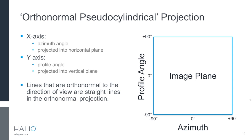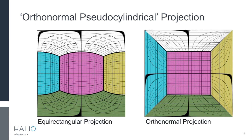The projection we're using for our maps is what we're calling an orthonormal pseudo-cylindrical projection. On the x-axis it has azimuth angle, and on the y-axis it has profile angle. The benefit is that lines orthonormal to the field of view are straight in the projected image. To demonstrate that, I have renderings of a cube with grids on the faces. In the equirectangular projection, commonly used in VR, the vertical lines are straight but horizontal lines are all curved.